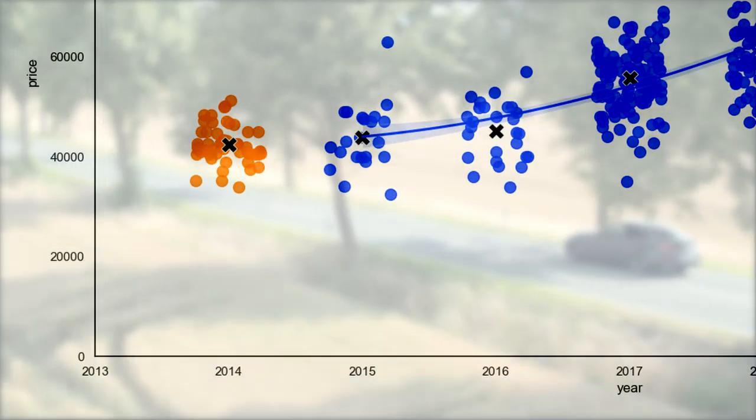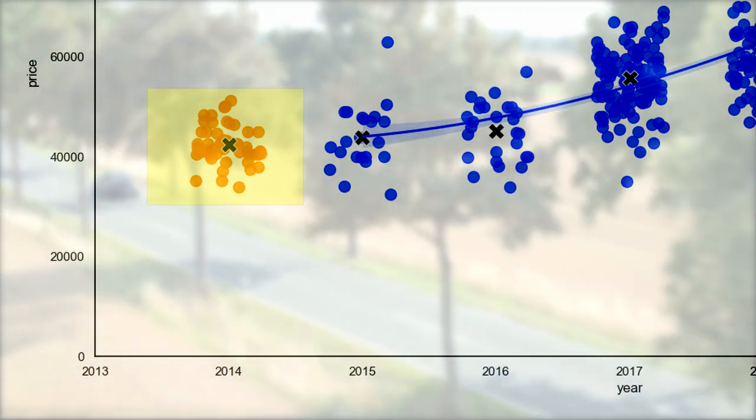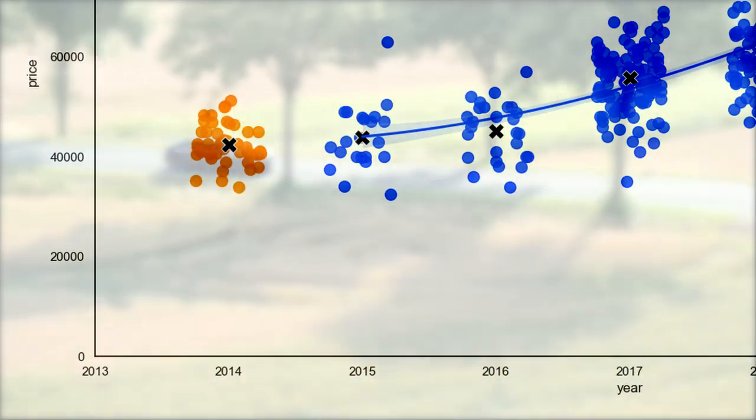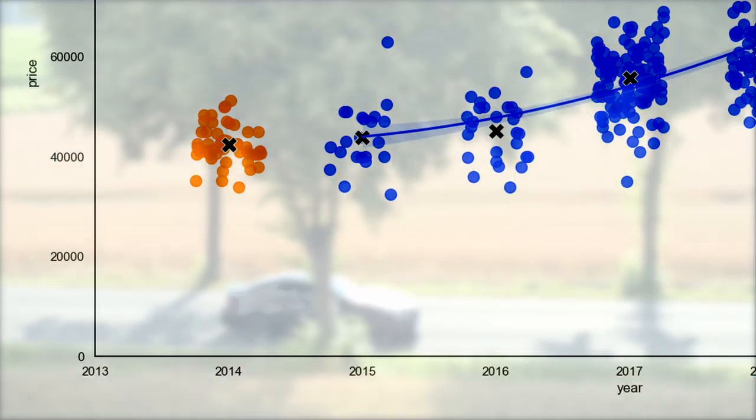You can see however that there are quite many forecasted values and that's because each of them represents a 2015 car with a different mileage. And it goes without saying that the lowest mileage cars will be priced the highest and the highest mileage cars the lowest.